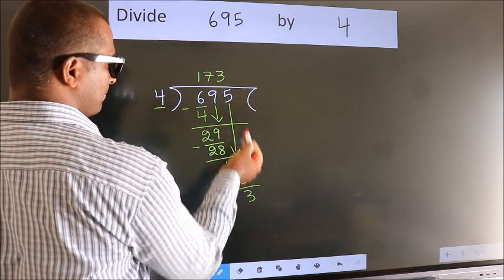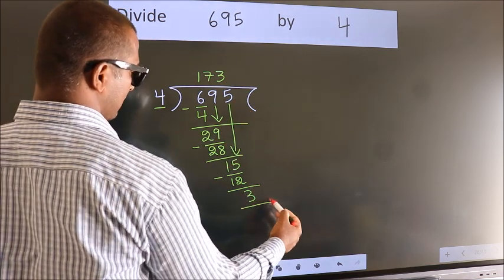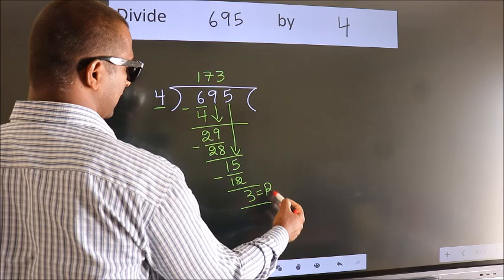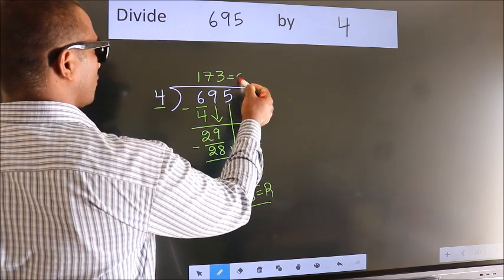No more numbers to bring down, so we stop here. This is our remainder. This is our quotient.